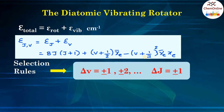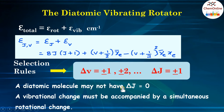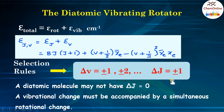The selection rules for combined vibrational and rotational transitions are: delta v equals plus or minus 1, plus or minus 2, plus or minus 3, etc., and delta j equals plus or minus 1. In the case of a diatomic molecule, delta j equals 0 is not allowed, meaning a vibrational change will always be accompanied by a simultaneous rotational change. Only under very special circumstances is delta j equals 0 allowed; in most cases delta j equals plus or minus 1.